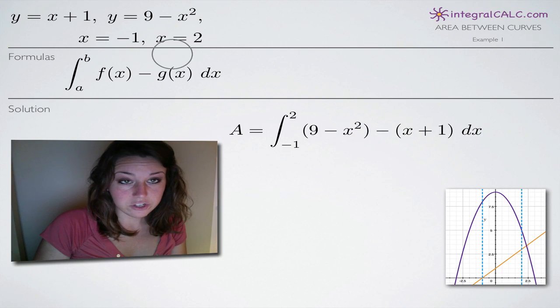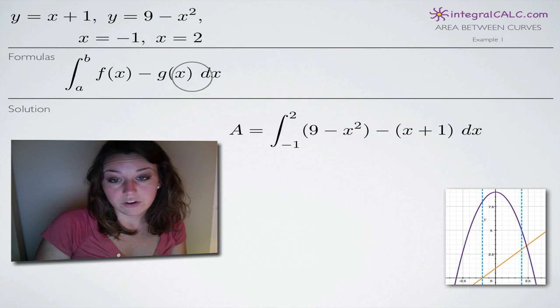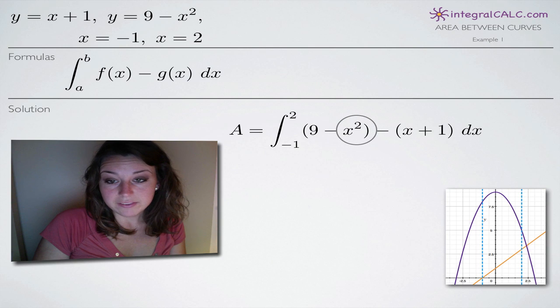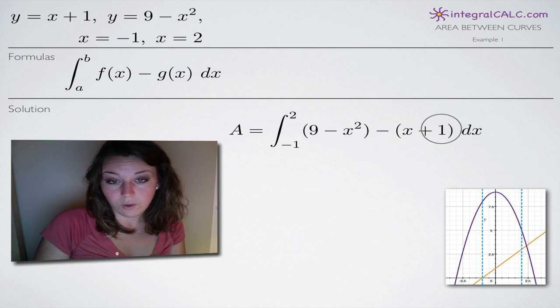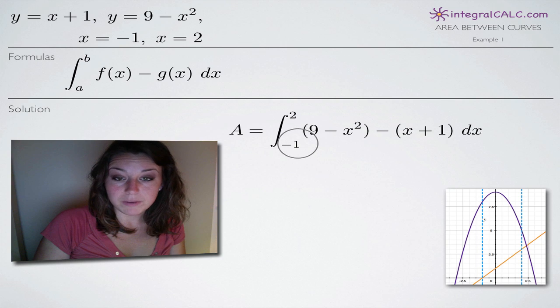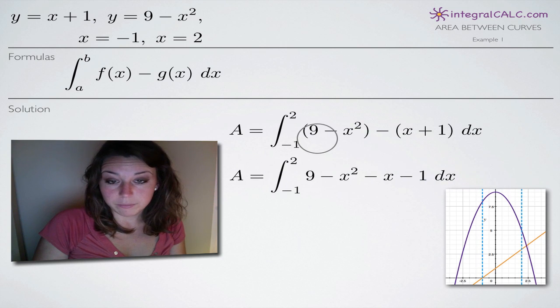So having determined that 9 minus x squared is f of x, we can go ahead and plug in both of our functions to the integral here. So 9 minus x squared will be f of x and we will subtract from that g of x which is x plus 1, and we're going to be integrating from negative 1 to 2. So now that we've got this set up, we're going to start simplifying.